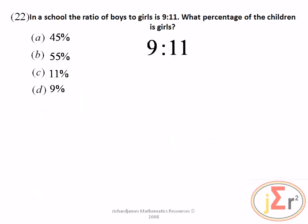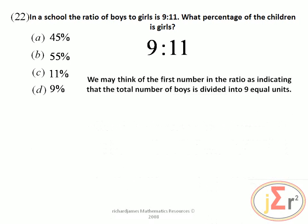In a school, the ratio of boys to girls is 9 to 11. What percentage of the children is girls? We are working with percentages now. We may think of the first number in the ratio as indicating that the total number of boys is divided into 9 equal parts, or we can call them units.